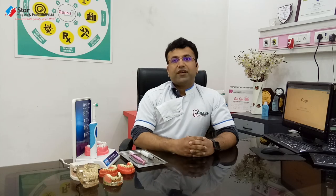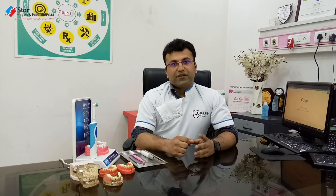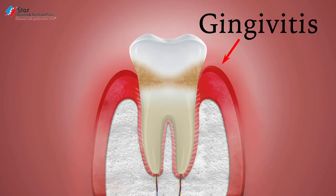Today we will talk about periodontitis, which is known as Pairia. How do we start with gingivitis? Gingivitis means gum swelling. This is the beginning of periodontitis.